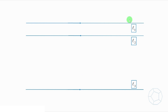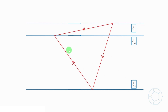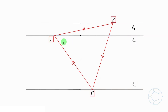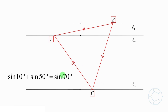Everything starts with three parallel lines L1, L2, and L3. Let's take one point from each line and join them so that it forms an equilateral triangle. Denote the three points as A, B, and C. To prove the identity, we set the two angles at point A to be 10 degrees and 50 degrees.